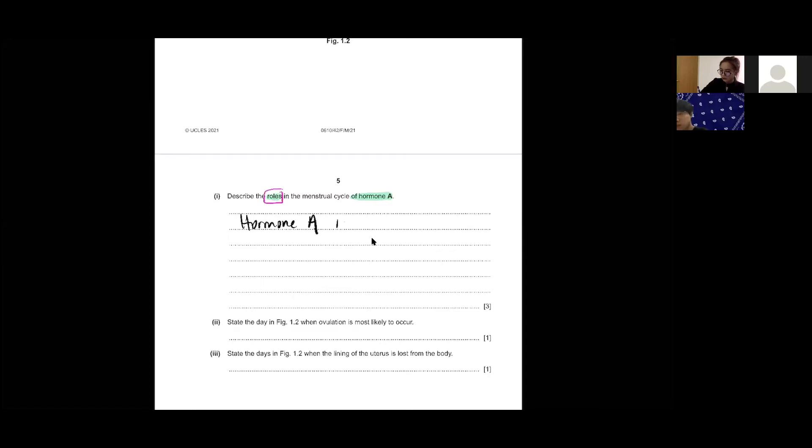You have to mention first what is hormone A. If you give the identity you will get one mark. Hormone A is estrogen. Then you mention the function. Estrogen is to repair the uterus lining, and also it is to stimulate the secretion of LH. It will cause the LH to be secreted. At the same time it will inhibit the secretion of FSH, simple as that.